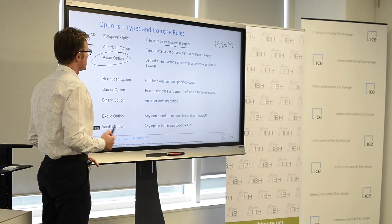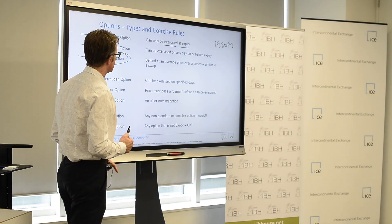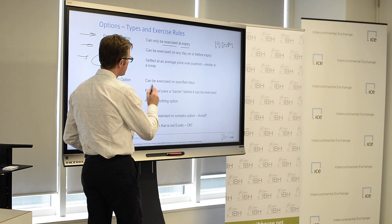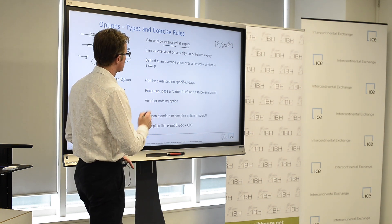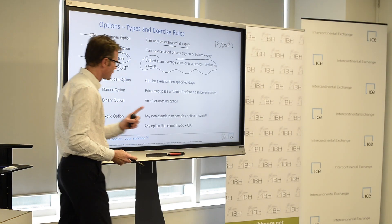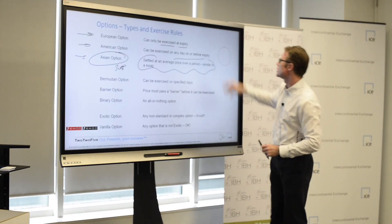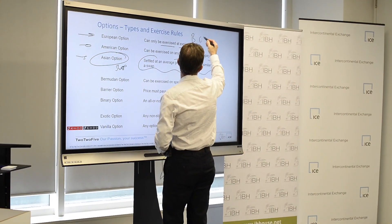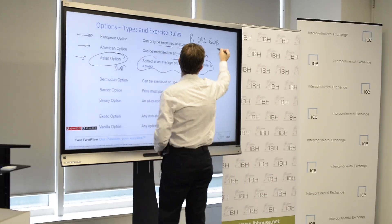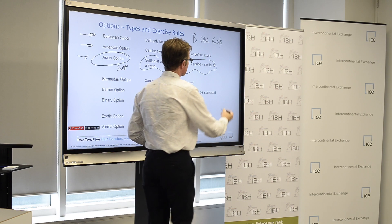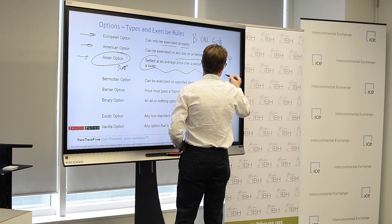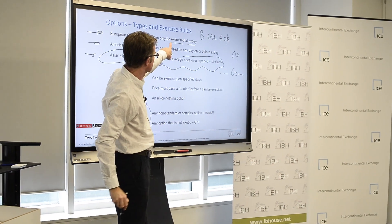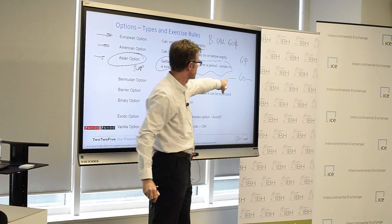That's not maybe as significant as you think. In general, you would never exercise an option early because when you do, you're giving up your optionality. For example, say you bought a call at $60 European, and the market is currently at $64.